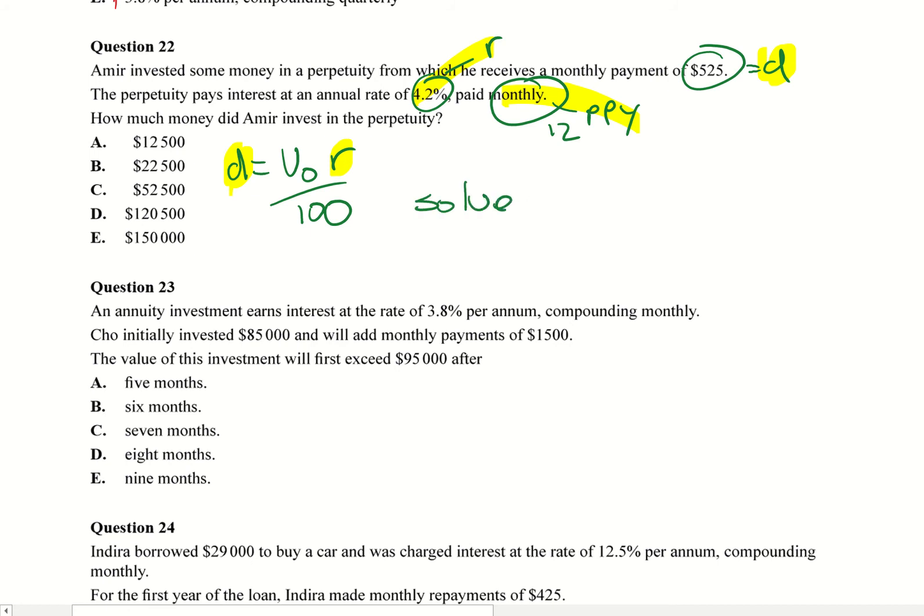Literally you can rearrange it if you want to, or you can just put in your calculator and go solve: 525 equals V0 times 4.2 divided by 12, and divide that all by 100. In your calculator you might not put V0, you just put V, but I'm just putting that there. You get V0 equals $150,000. So that's E.